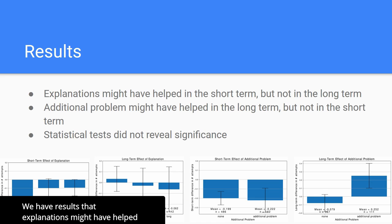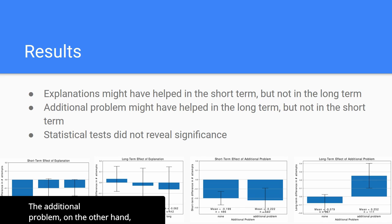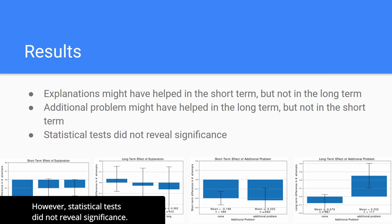We have results that explanations might have helped in the short-term, but had no effect in the long-term. The additional problem, on the other hand, might have helped in the long-term, but not in the short-term. However, statistical tests did not reveal significance, and this is an important caveat of the research.